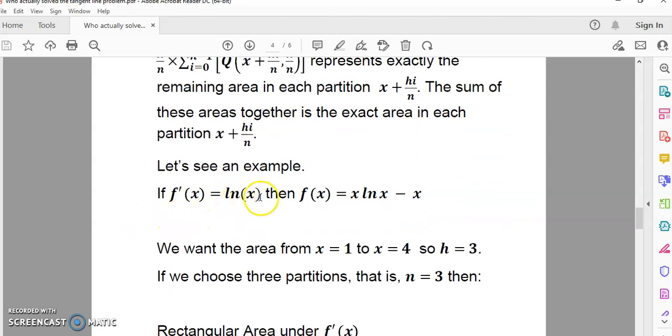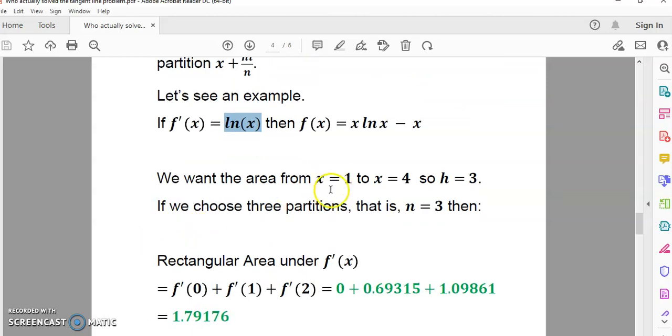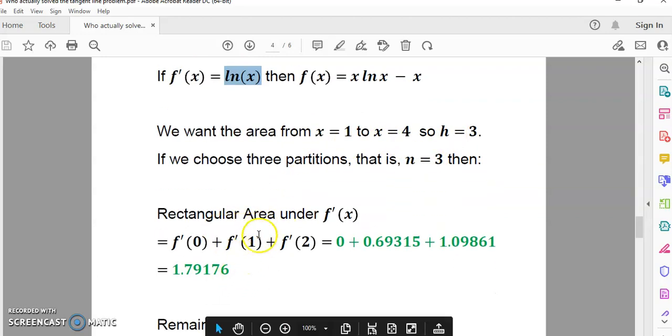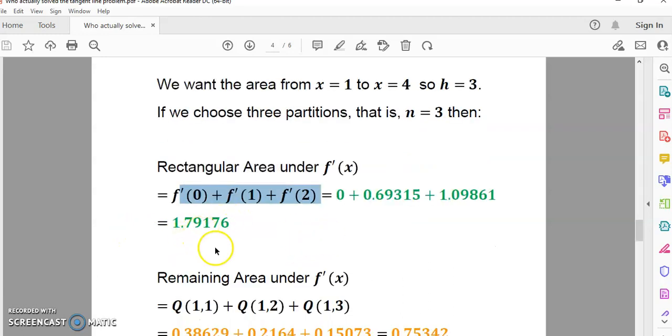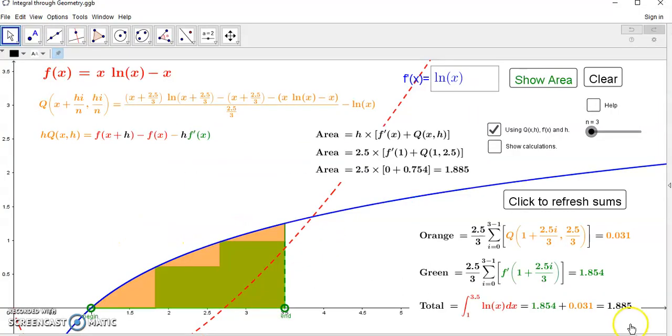Let's see an example. If we have this function here, log of x, then its primitive is the function x log n, the natural logarithm, by the way. It's log x to the base e minus x. So, we want the area from 1 to 4, and so h, in this case, is 3. And if we choose three partitions, then n is 3. This shows you how we can actually calculate the area. So, the green areas are given by these derivatives. And the total, in this case, is 1.79176.